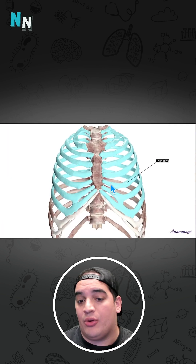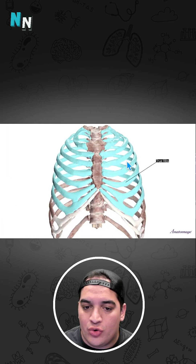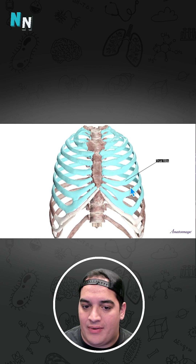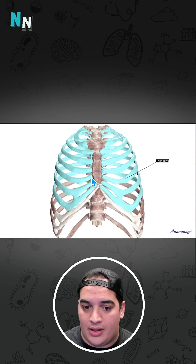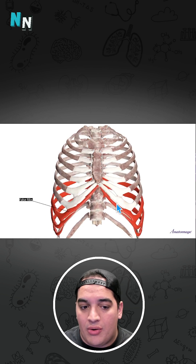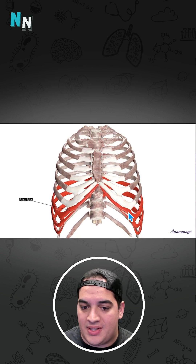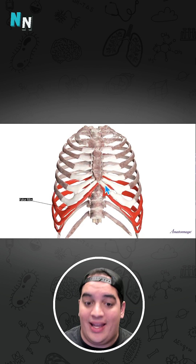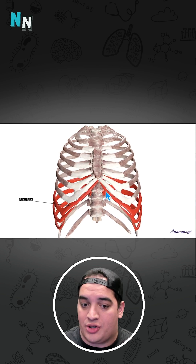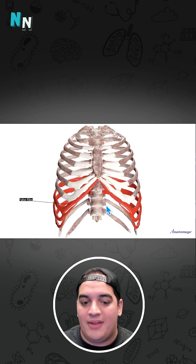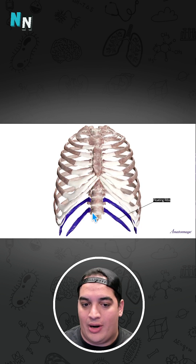Now let's zoom in on the ribs. We have true ribs, ribs one to seven, which connect to the sternum via the costal cartilage. Below that are the false ribs — ribs eight to ten — which connect to the sternum indirectly via the cartilage above them. And then finally we have the floating ribs.